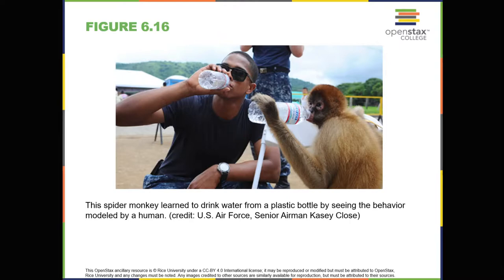For example, in a study of social learning in chimpanzees, researchers gave juice boxes with straws to two groups of captive chimpanzees. The first group dipped the straw into the juice box and then sucked on the small amount of juice at the end of the straw. The second group sucked through the straw directly, getting much more juice. When the first group, the dippers, observed the second group, the suckers, all of the dippers switched to sucking through the straws directly. By simply observing the other chimps and modeling their behavior, they learned that this was a much more efficient method of getting juice.